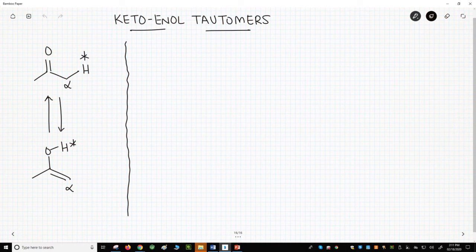There are lots of examples of tautomers, but the most common example is the keto-enol tautomerization. That's what we have to the left of the screen.